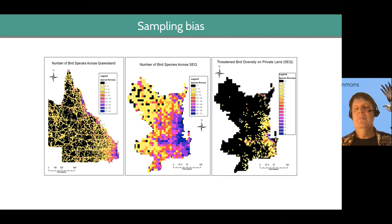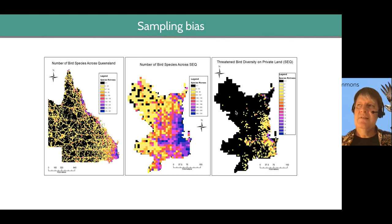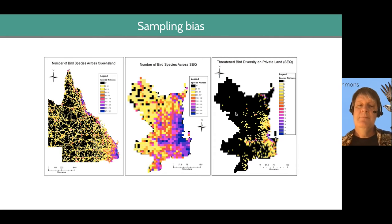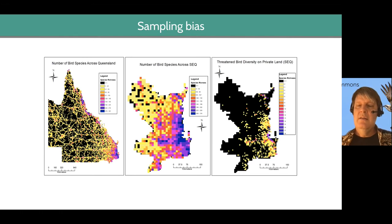But there's some really great habitat out here on these farms or private forests. Surely that's a better place to put a reserve. But we don't have any data — it takes a lot of surveys to pick up rare and threatened species, sometimes targeted techniques. We've got that close to Brisbane, but we don't have that kind of survey effort out here.